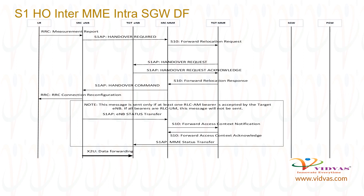Target MME sends S1AP MME status transfer to target ENB. If there is any uplink or downlink data received at source ENB from the UE or for the UE, source ENB forwards the data to target ENB by sending X2U data forwarding message. This is because handover is in progress. Target ENB takes responsibility of sending the UE data.